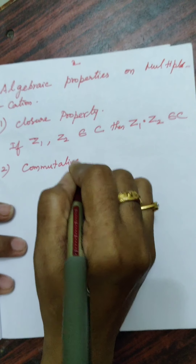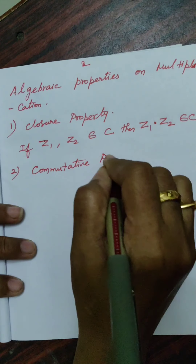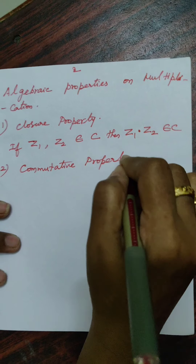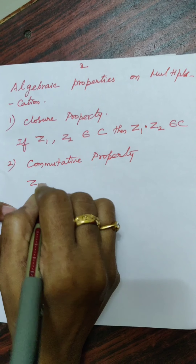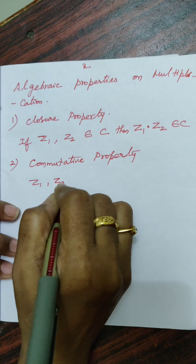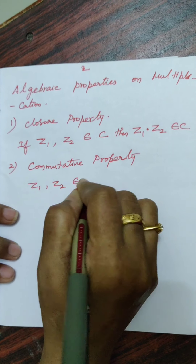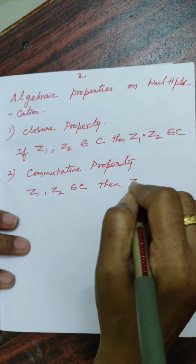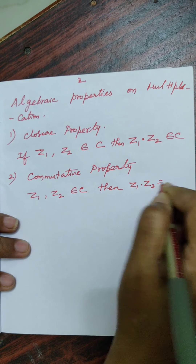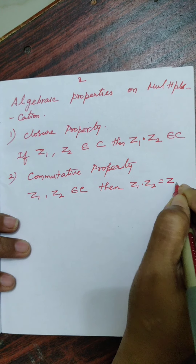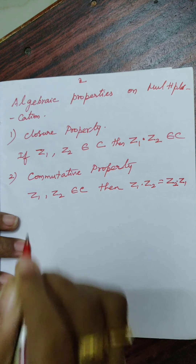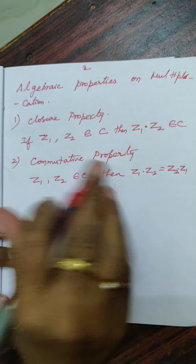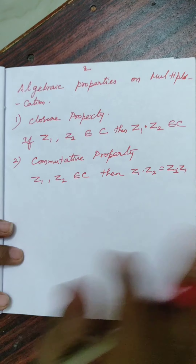The second property is Commutative property. For Z1 and Z2 belonging to C, Z1 into Z2 equals Z2 into Z1. This is the Commutative property, the same as for addition.